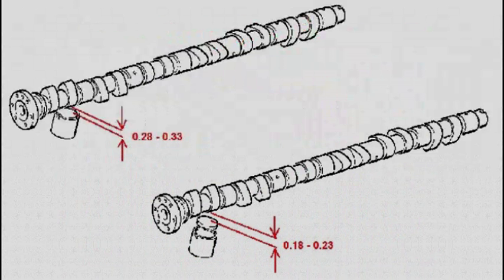The tolerance for the exhaust valve clearance is 0.28 to 0.33 mm. If we were doing the inlet, the inlet tolerance is 0.18 to 0.23 mm.